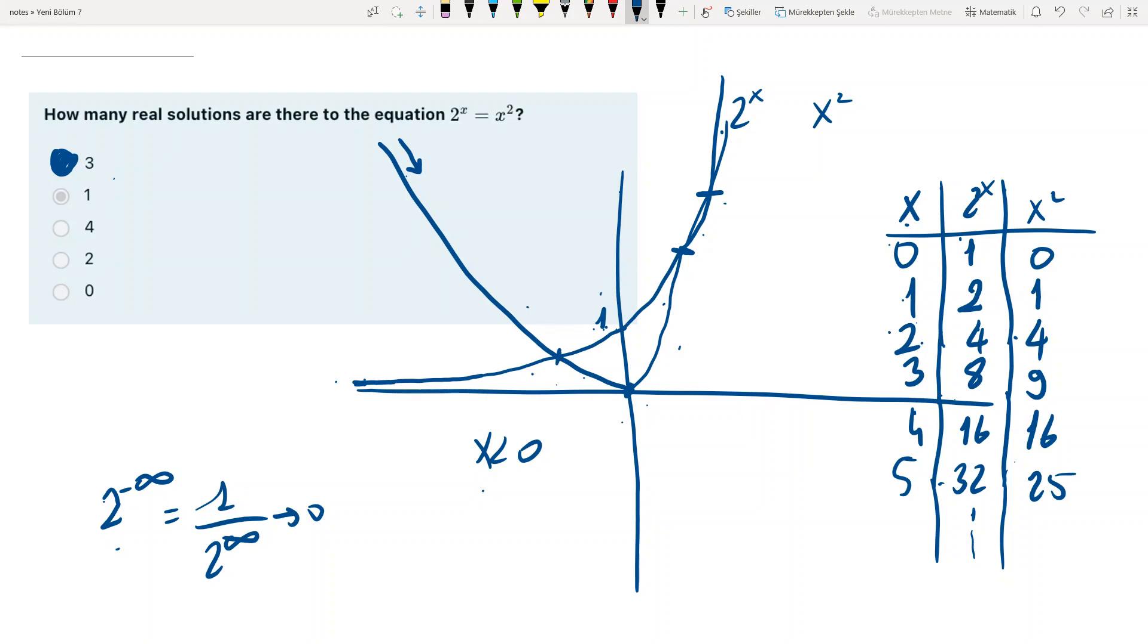So I am kind of sure that when x is greater than 4, there is no more intersection points. It's better not to worry about the points where x is not an integer. So with an intuitive approach, we can say that there are three solutions to this equation.